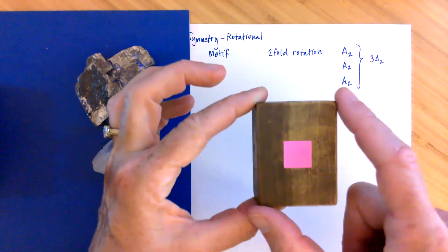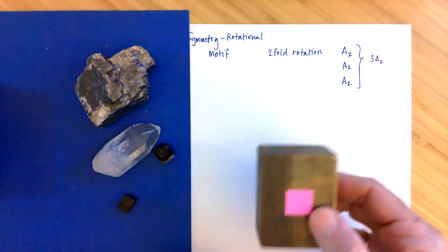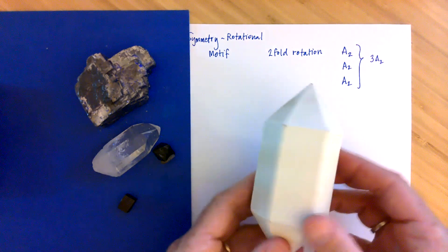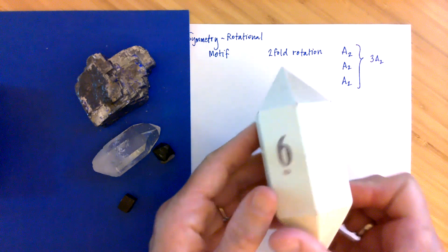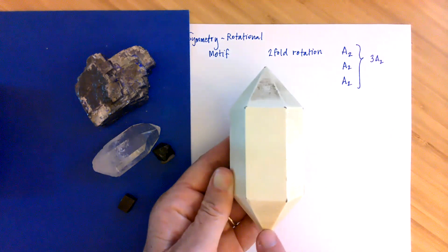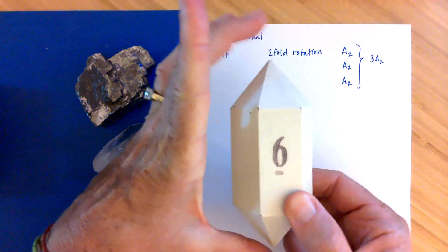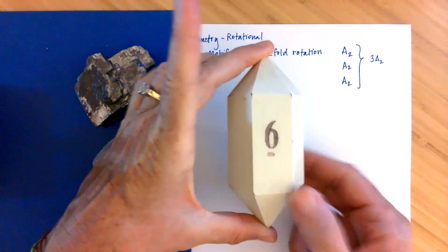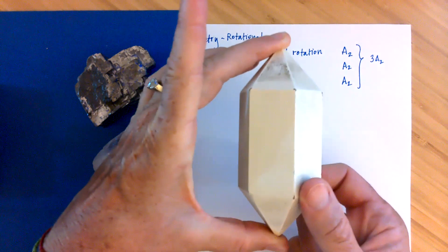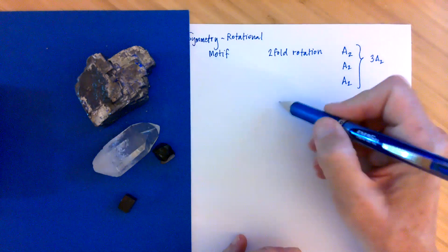We can check all sets of axes to find how many rotational axes we have and report them with our notation. Now let's look at another model. In this model the motif is a rectangle with a triangle or pyramid on the top and bottom. Starting from a marked point, I test the corners or points, looking for that motif — the rectangle with a triangle on the bottom and on the top. I see it one time, two times, three times, four times, five times, six times, and back to the beginning: six-fold rotation.